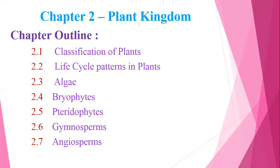Algae are the first green pigment-containing plants — that is, the first chlorophyll-containing plants. Bryophytes live in an amphibious environment because they have relatively low capacity. Pteridophytes are vascular cryptogams. We will also study vascular plants, plant floral secondary growth.